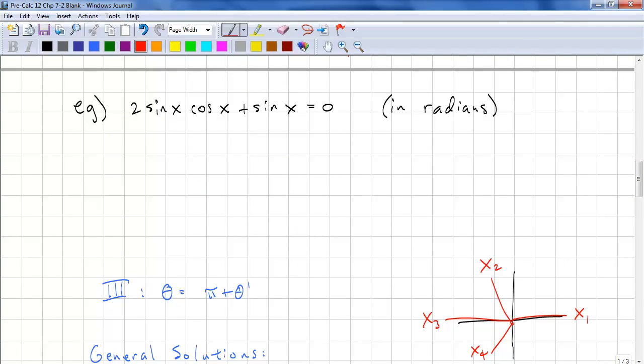Let's look at the next example. We have 2 sine x cos x plus sine x and we need to solve this in radians. Because we don't have a higher degree, it's not necessary to use variables to substitute. What we do need to do is we need to factor. So we have sine x times 2 cos x plus 1 equals 0.